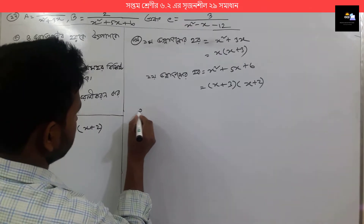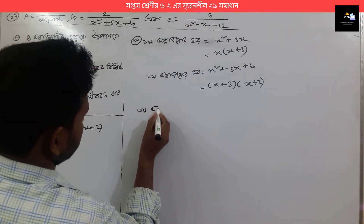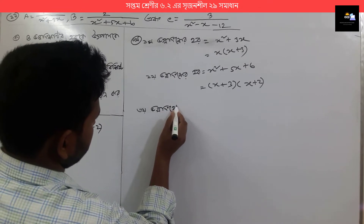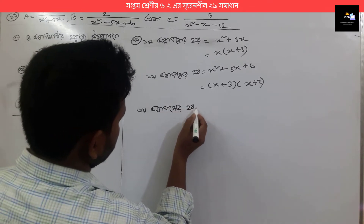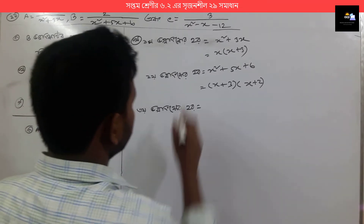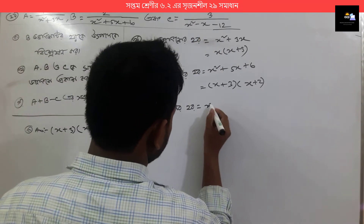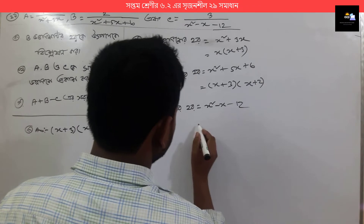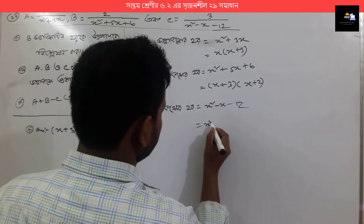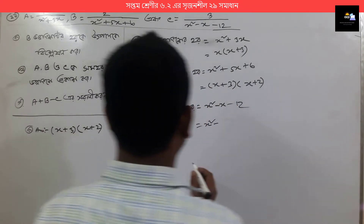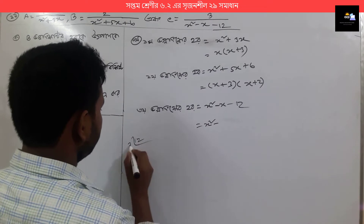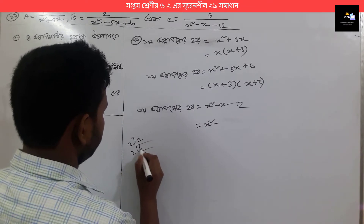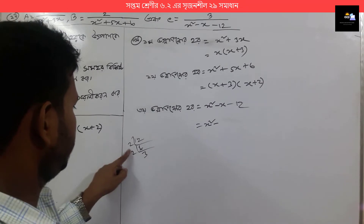We write x plus 3 into x plus 2. Here, the same kind: 1 minus x plus 12. Here all of this we just wrap up — all of this is 6 and all of this is 3.